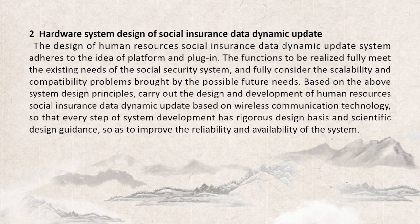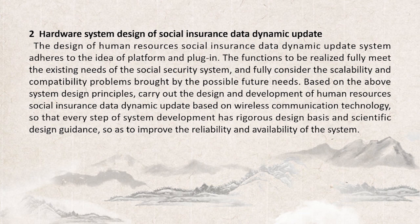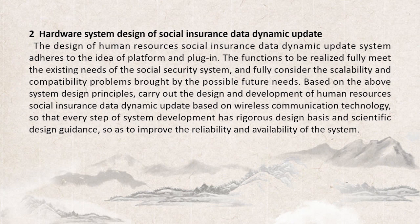Hardware system design of social insurance data dynamic update. The design of the human resources social insurance data dynamic update system adheres to the idea of platform and plug-in. The functions to be realized fully meet the existing needs of the social security system, and fully consider the scalability and compatibility problems brought by possible future needs. Based on the above system design principles, the design and development of human resources social insurance data dynamic updates based on wireless communication technologies is carried out, so that every step of system development has rigorous design basis and scientific design guidance, so as to improve the reliability and availability of the system.